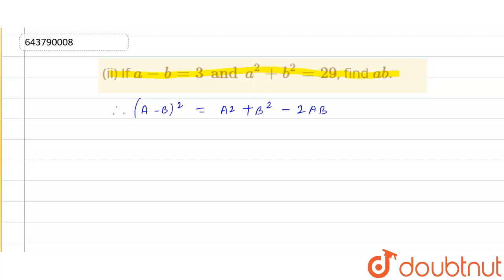So now by putting values we get at the place of a minus b it will be 3 whole square is equals to a square plus b square which is equals to 29 minus 2ab.